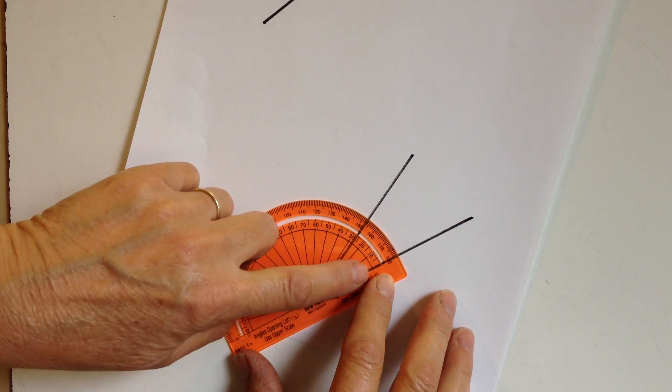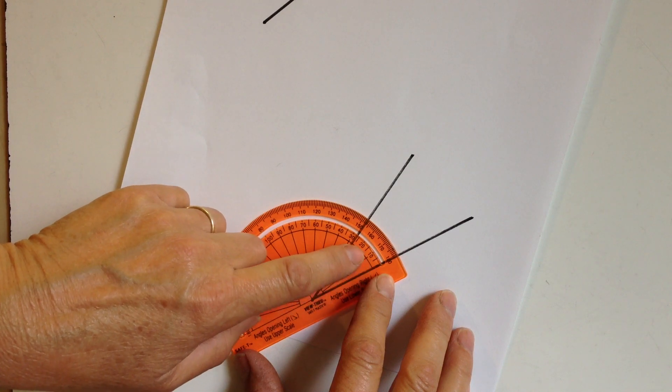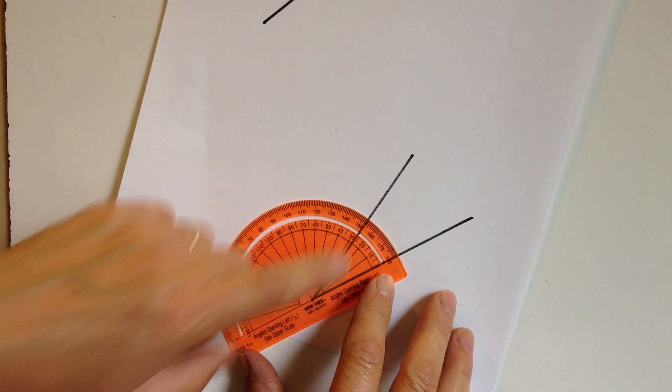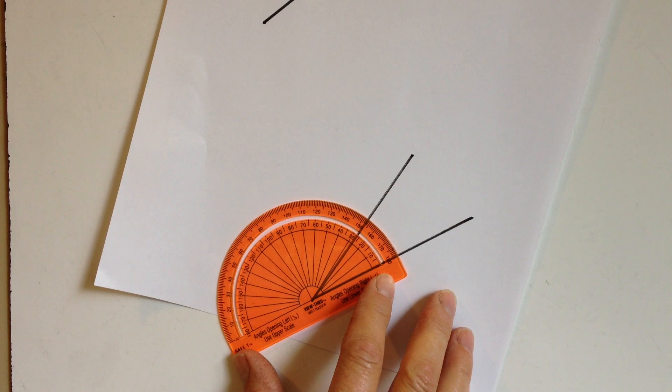Now zero is here, so we're going to start counting from there: 0, 10, 20, 25, maybe 27 degrees. So that angle measures 27 degrees.